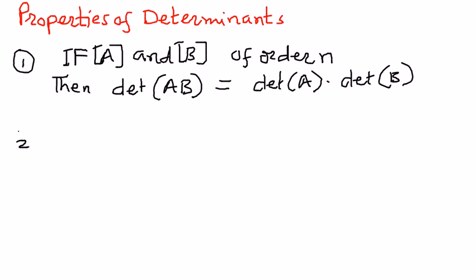Property number 2. If A is an n by n matrix, and if we have a scalar which we normally call C, C is a scalar quantity. Scalar quantities are constant quantities, that's the way we can think about them.